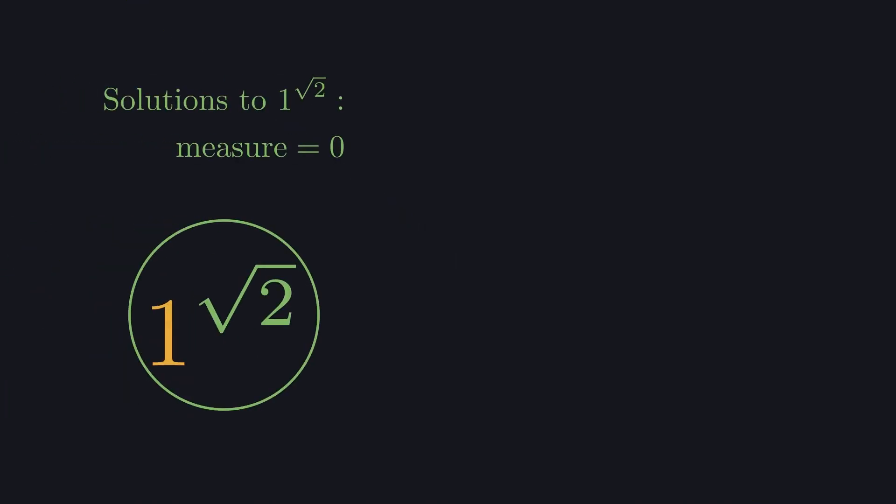But no pattern ever emerges, and the circle never gets filled in, not even after infinitely many steps. In fact, the complete set of solutions to 1 to the power of √2 contains exactly none of the length of the continuous unit circle, even though there is no section of the unit circle you could pick that doesn't contain infinitely many of these solutions.